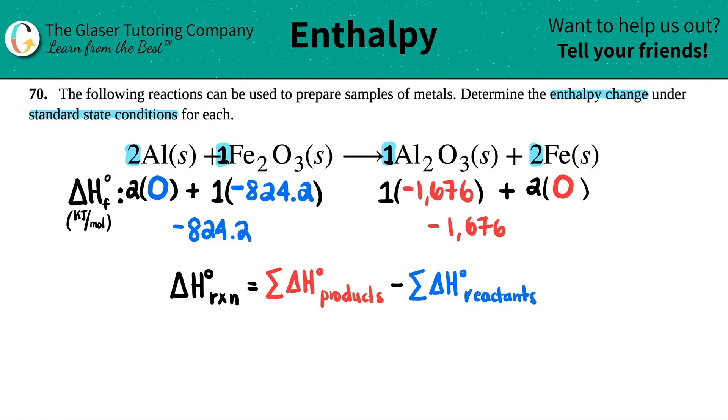Now since I have one number for each, let's plug it into the formula. So the sum of all the products was the negative 1,676 minus the reactants, which is the negative 824.2. And remember, if you're minusing by a negative, it's keep, change, change. So technically you're adding by a positive value as well.